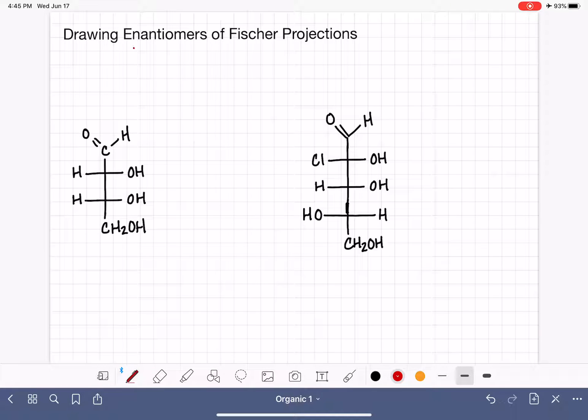The enantiomer of a molecule is simply its mirror image. So when we are asked to draw the enantiomer of a molecule, whether it's in a Fischer projection or not, we are just being asked to draw the mirror image of that molecule. And this is actually very simple to do with a Fischer projection.